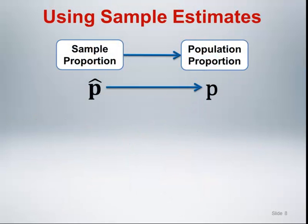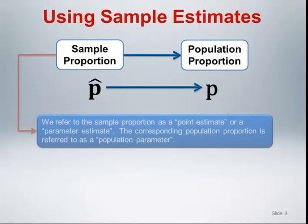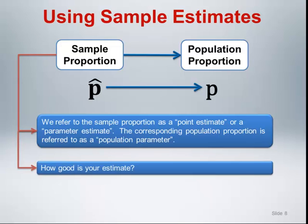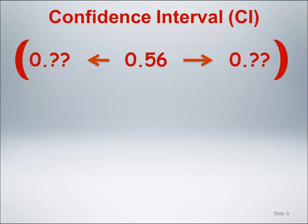Some terminology and notation. The goal is to use the sample survival proportion, commonly written as p-hat, to say something about the population survival proportion, commonly written as p. We refer to the sample proportion as a point estimate or a parameter estimate. The corresponding population proportion is referred to as a population parameter and is considered to be an unknown fixed value. When you analyze data, you don't know the actual population value — you only have the results from the single sample you have collected. The sample survival proportion is our best estimate of the population proportion, and we want to know how good our estimate is. We quantify this by constructing an interval around the sample survival proportion that we believe will contain the population survival proportion. We call this range of values the confidence interval.